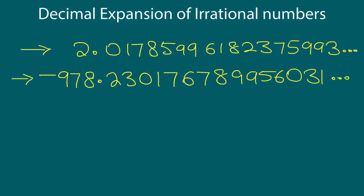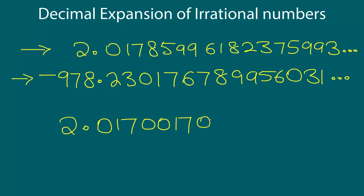One way to think about writing these numbers is to introduce a pattern that makes it very obvious they will go on forever and will not repeat. For example, let's modify the first number. Let's write 2.017, and take the digits 017 as our base. Then we write 0017, 00017, 000017, and so on and so forth.